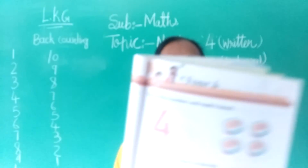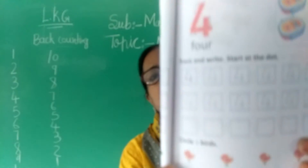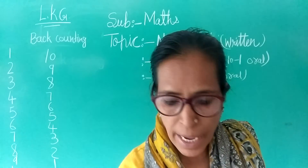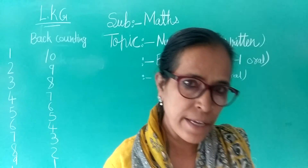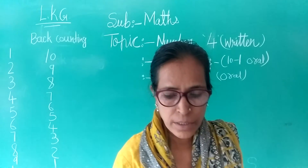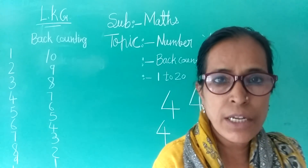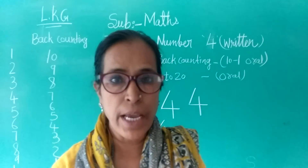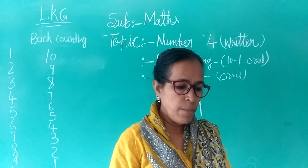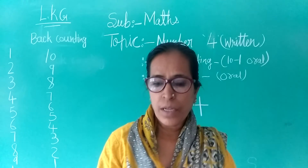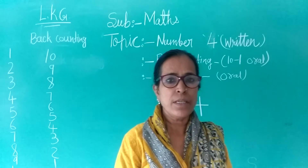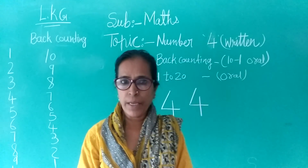Dekho, it is like this — slant line, sleeping line and standing line. So I am going to call orally 1 to 20, back counting. Okay?